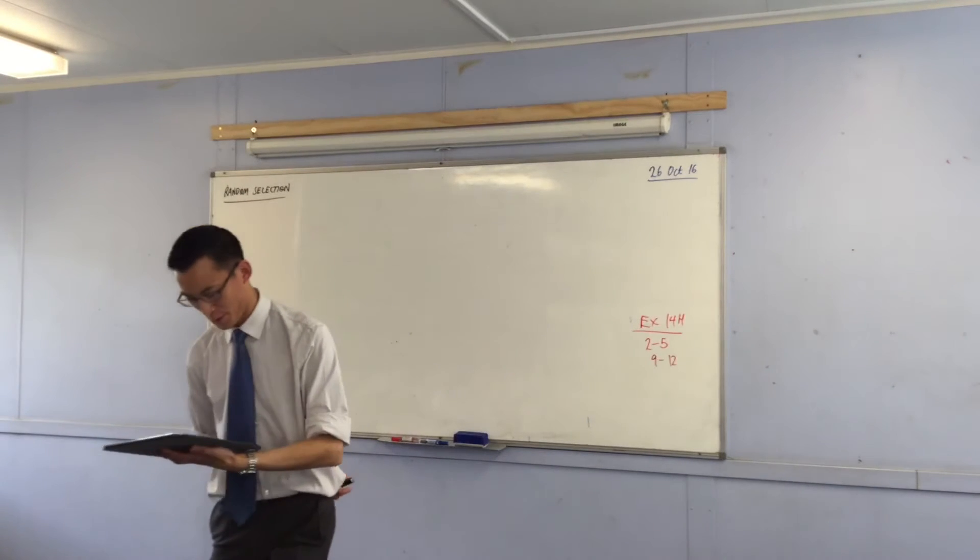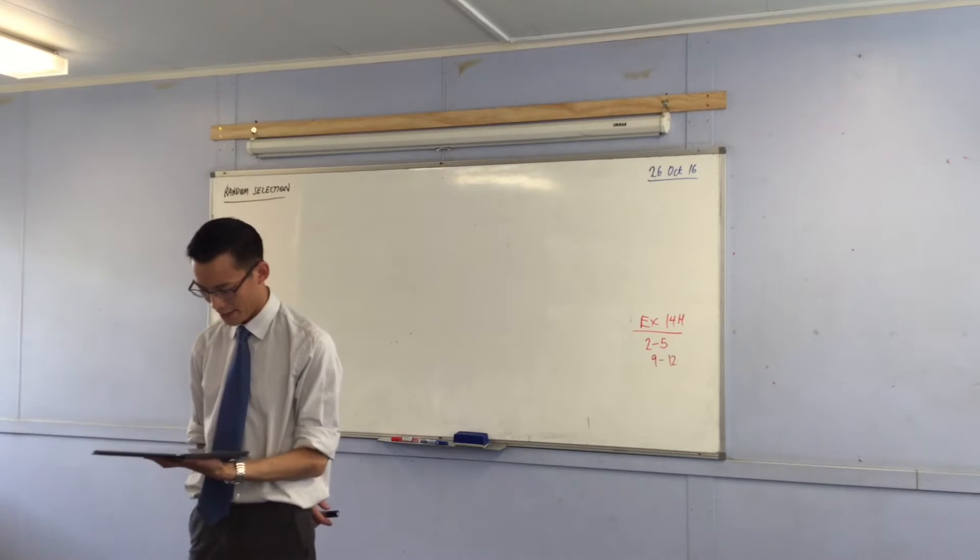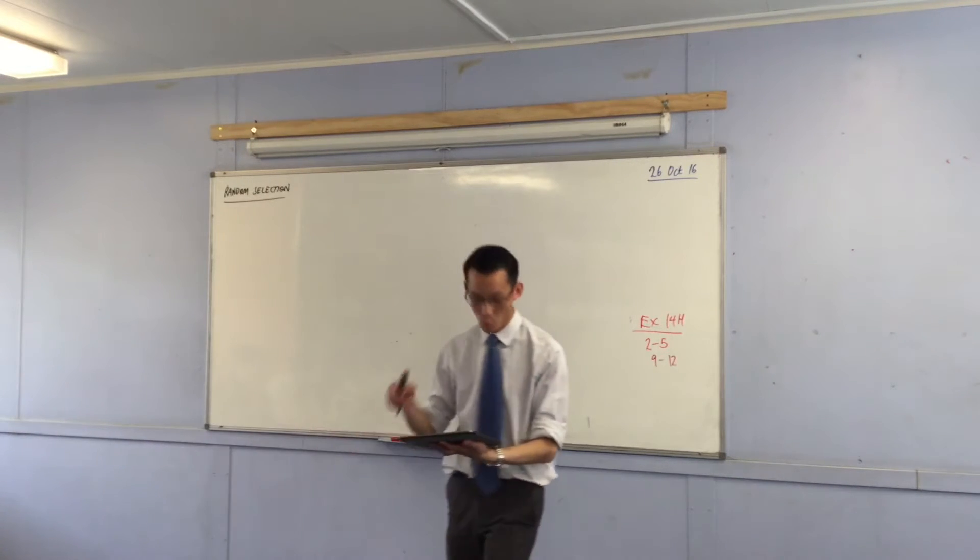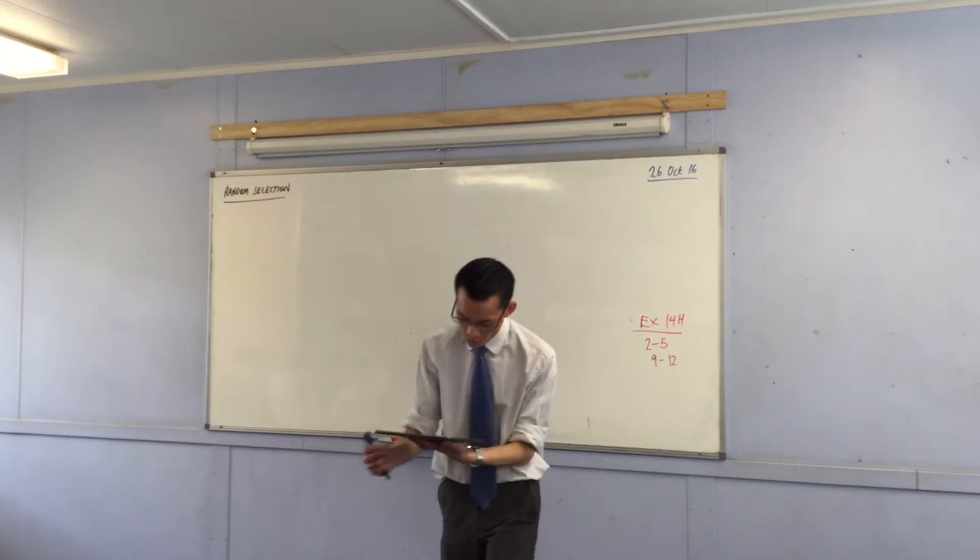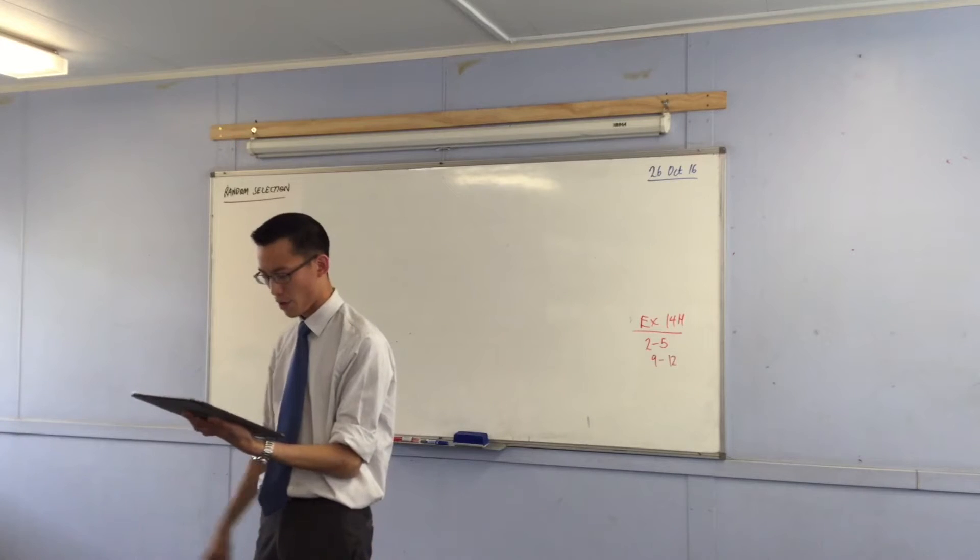The number of different orders in which four songs A, B, C and D can be played if no song is repeated. That's the question. What's the number of different orders in which four songs can be played if no song is repeated?